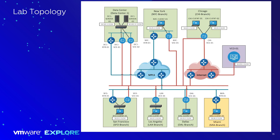This is the lab topology. On the right we have our orchestrator virtual machine, which you'll use to administer all edges and remote sites. We have our Chicago branch with a virtual edge and two VLANs. We have VLAN 1, and we'll be configuring secondary VLAN 2 to simulate two different clients on two different interfaces directly connected to this edge, with two internet-connected links to our simulated internet cloud via Viptela routers. New York has a single edge with a Viptela router connected directly to the MPLS, with the edge also connected directly to the internet.